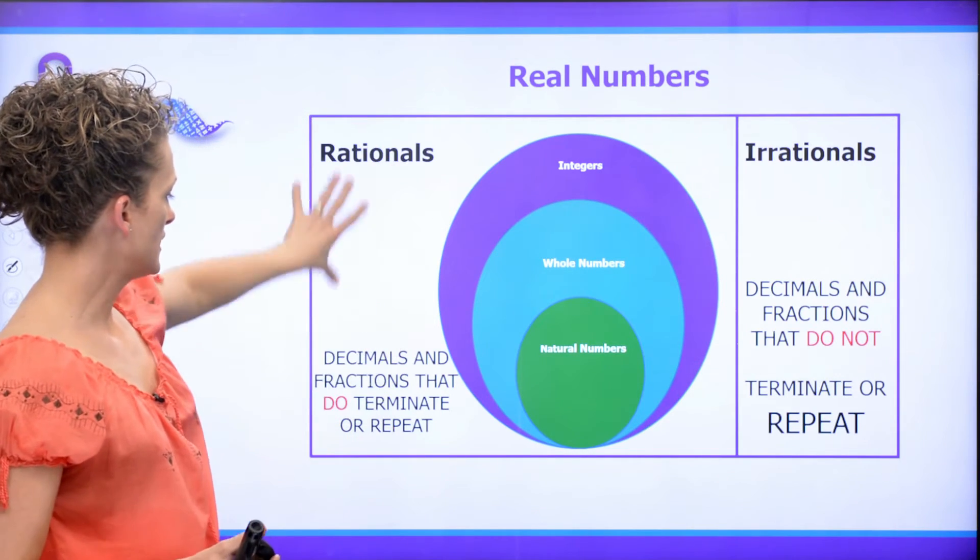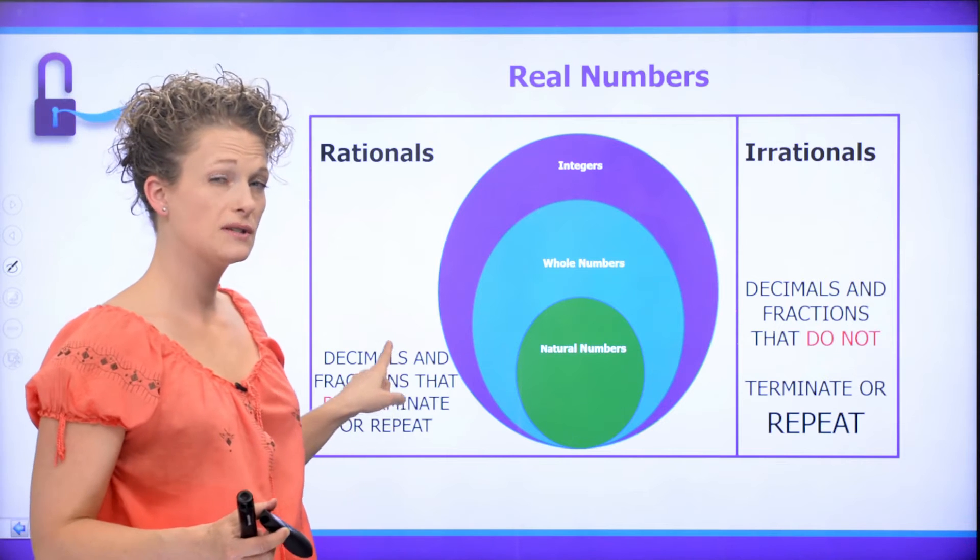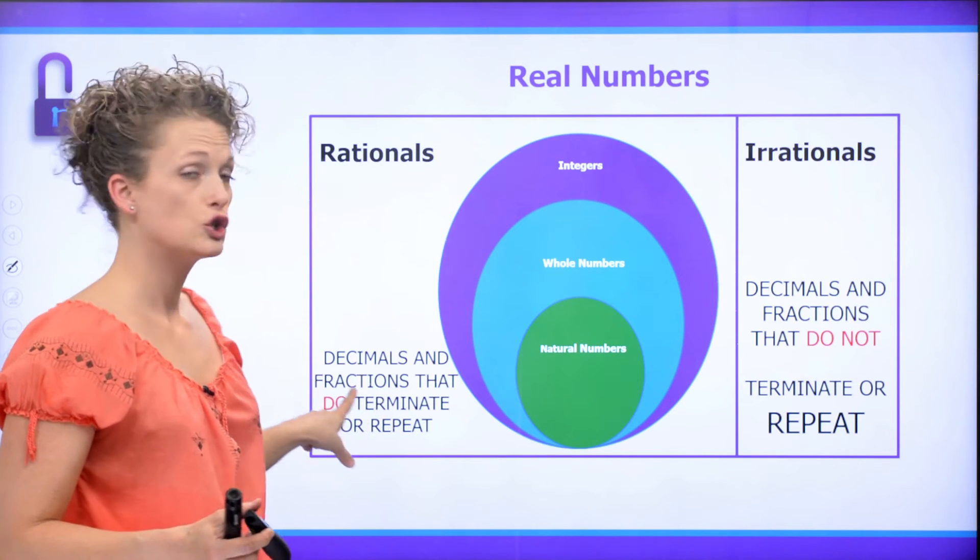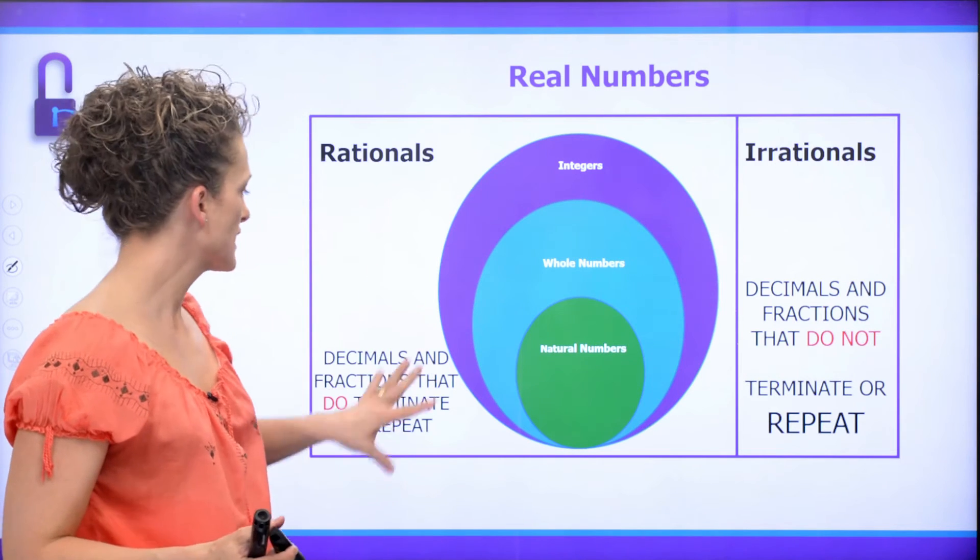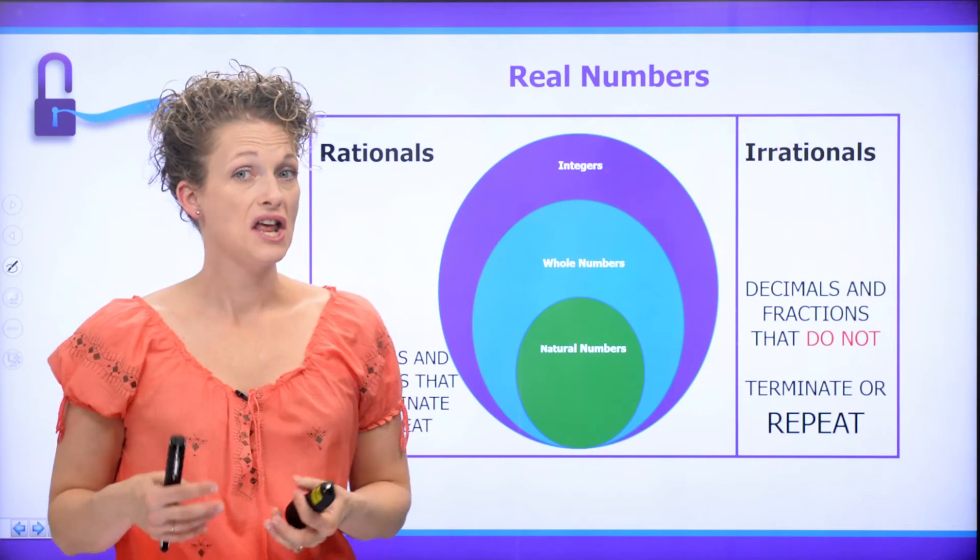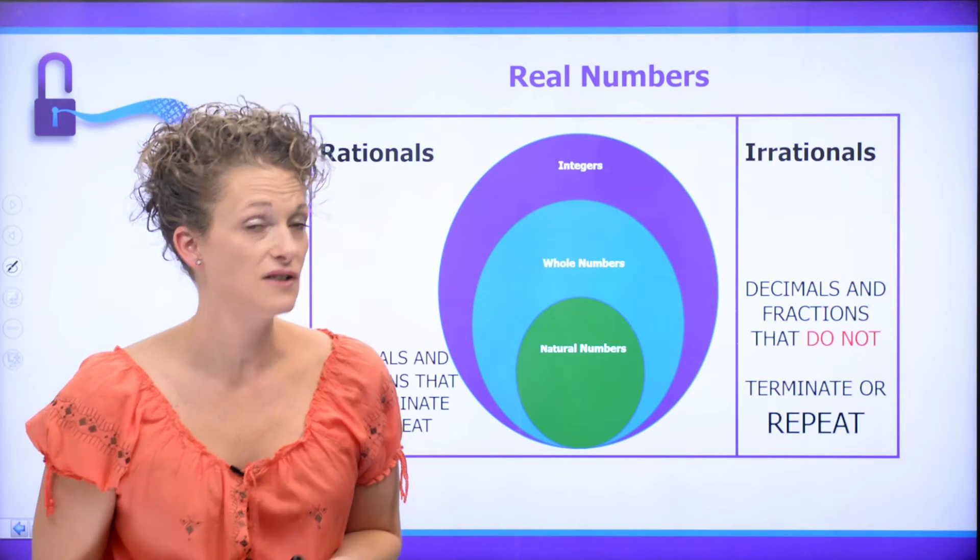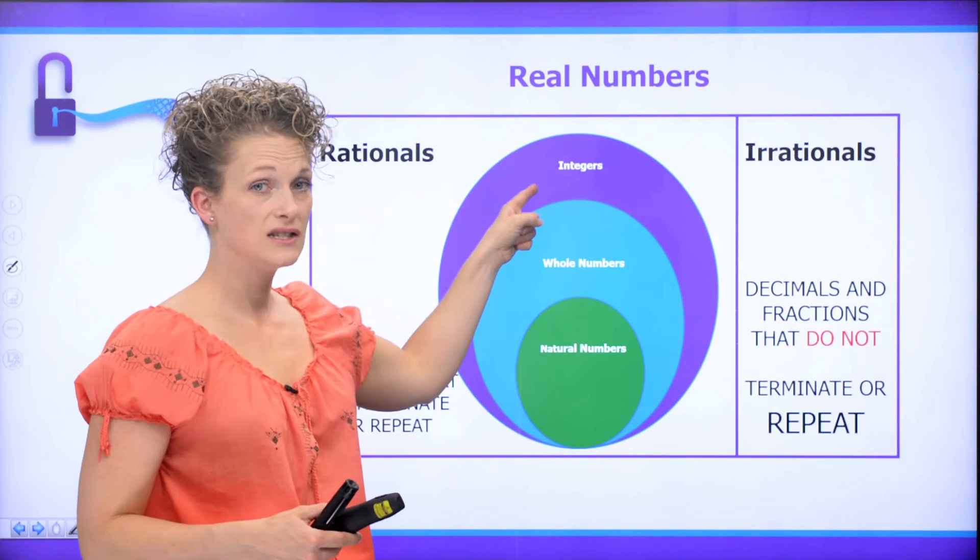Now on this outside, we see that we have decimals and fractions that do terminate and do repeat. And we're going to get into that. But we can see that the negative 120,000 belongs in this integer set.